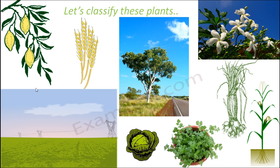Now let's classify some plants as herb, shrub, or tree. The lemon plant is an example of a shrub, because it is neither too big nor too small. Wheat is an example of a herb — it is almost like a grass, with no very distinct stem, flowers, or fruits. The eucalyptus is a big tree, so it is definitely a tree. Jasmine is again a medium-sized plant, so it is an example of a shrub.